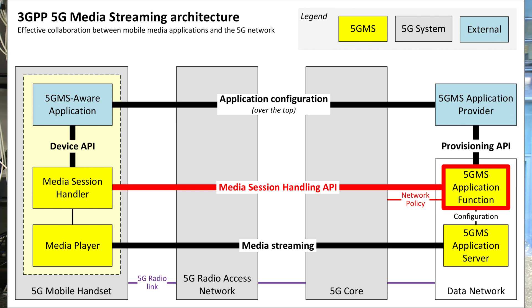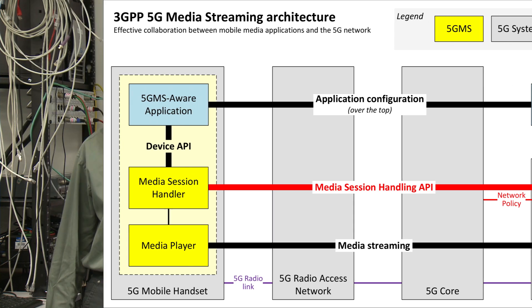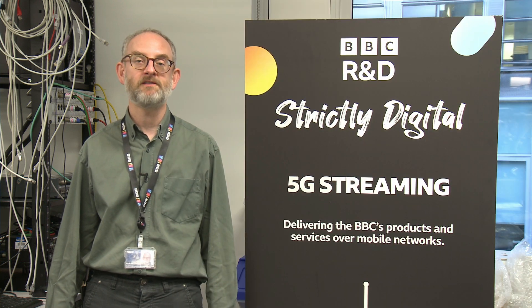Applications can also request an estimate of the bit rates that the network can currently sustain and can request a short boost to help them replenish their buffers. Finally, the mobile handset can report both media consumption and quality experience metrics to the 5G MS application function to help it better understand what's going on in the network.